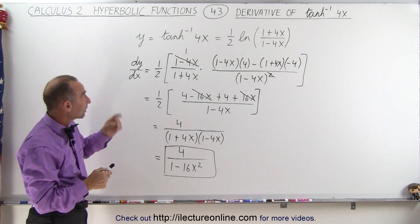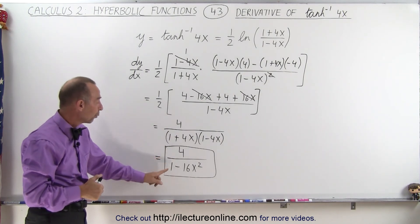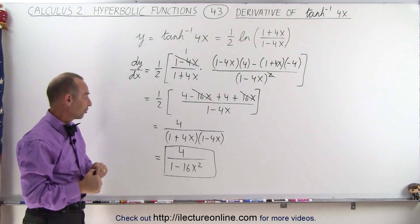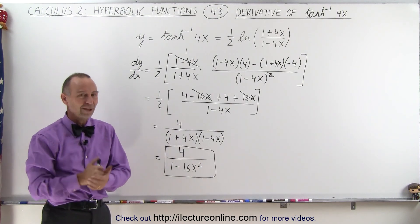If this had been the inverse hyperbolic tangent of x, it would be 1 over 1 minus x squared. So that's how it's different. And that's how it's done.